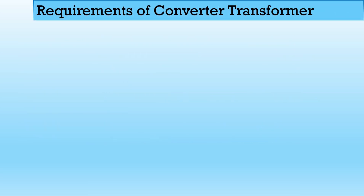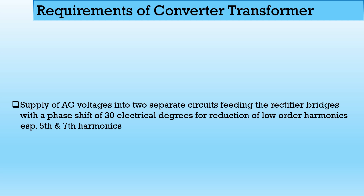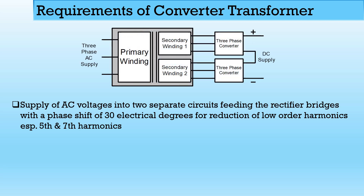Let's begin with the requirements of the Converter Transformers. The first requirement is supply of AC voltage into two separate circuits, feeding the rectifier bridge with a phase shift of 30 degrees electrical, for reduction of lower order harmonics — especially the 5th and 7th harmonics. The secondary winding is divided into two parts, and the EMF induced in the first part has a 0-degree phase shift with the primary winding.